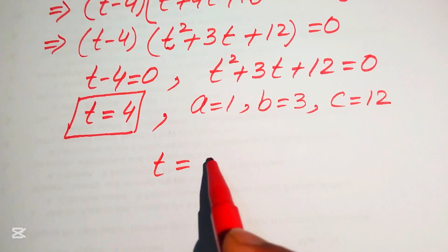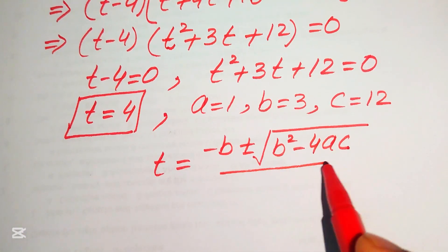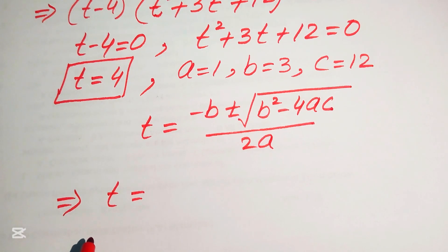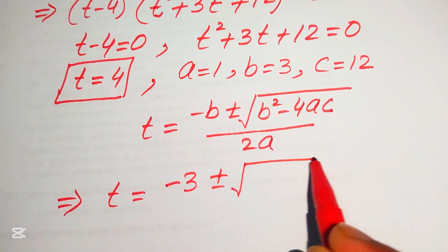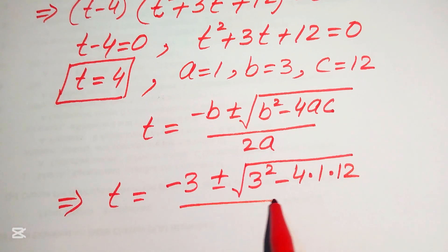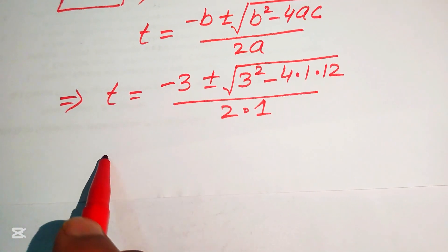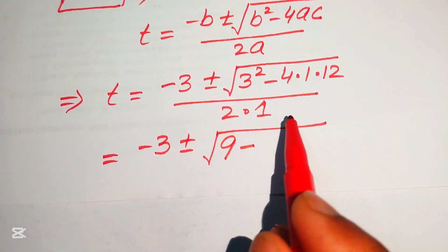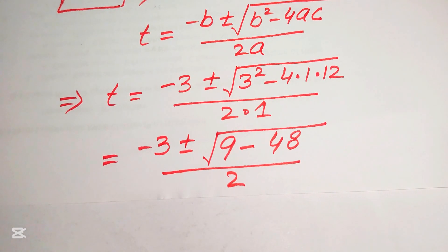The quadratic formula is t equals (minus b plus or minus square root of b squared minus 4ac) divided by 2a. Substituting: b equals 3, so minus 3 plus or minus square root of 3 squared minus 4 times 1 times 12, divided by 2 times 1. This simplifies to minus 3 plus or minus square root of 9 minus 48, divided by 2.